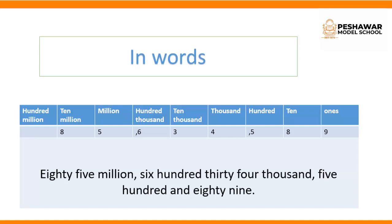From the right-hand side: 9, 8, 5 form the units period; then a comma; 4, 3, 6 form the thousands period; then 5, 8 form the millions period. Now writing in words: five million — 5 is in the place of millions — then six hundred thirty-four thousand, then five hundred and eighty-nine. This is called writing the number in words.